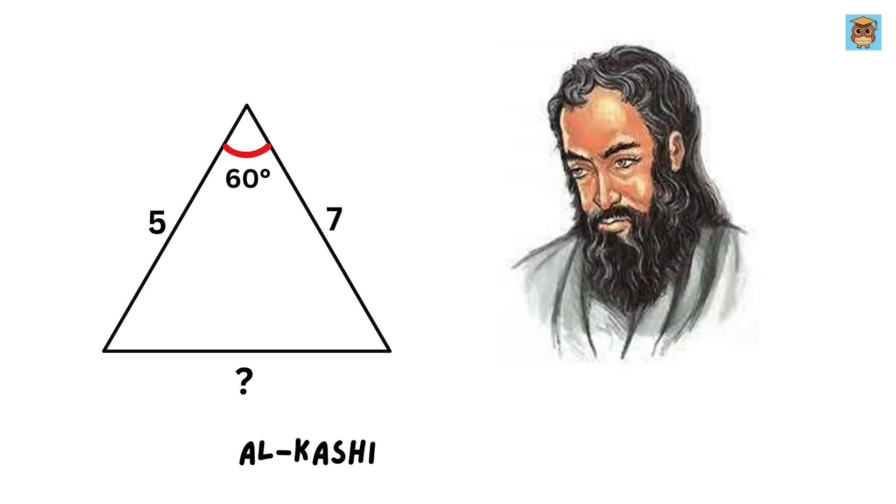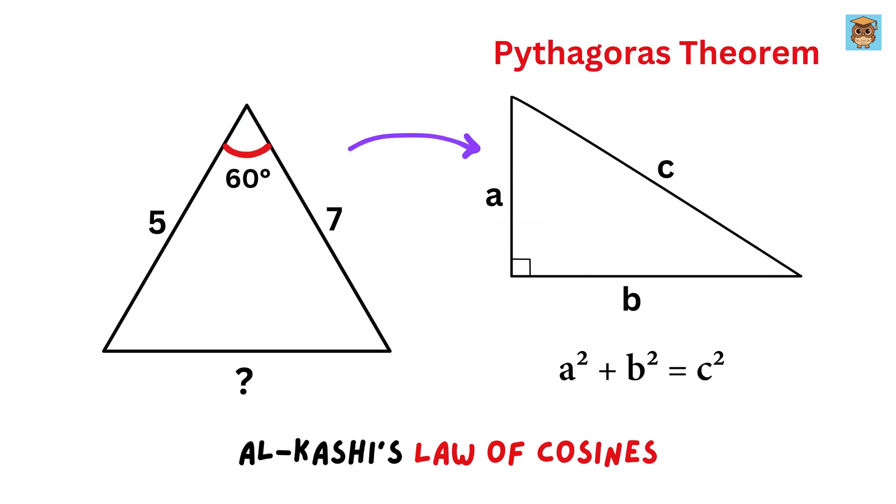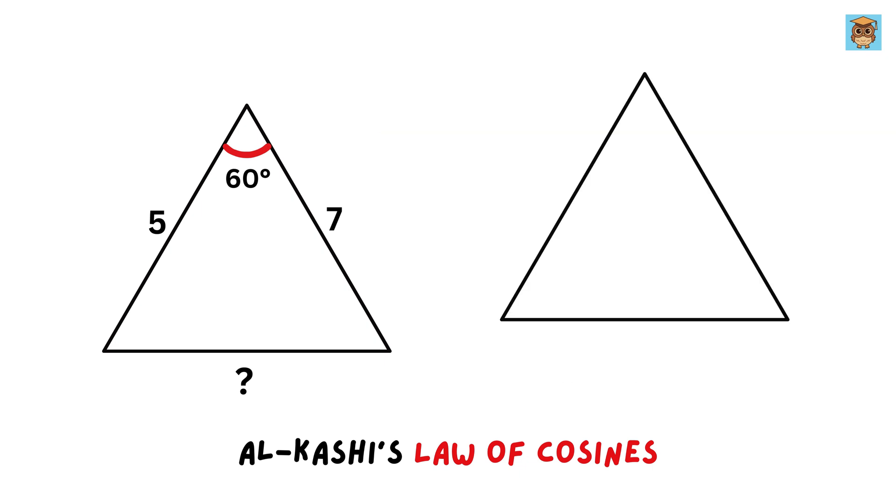This is where Al-Kashi's Law of Cosines steps in to save the day. It is a brilliant extension of Pythagoras' theorem, designed to work with any triangle no matter how its angles are arranged. Imagine you have a triangle with sides labeled A, B, and C, and let the angles opposite these sides be called A, B, and C, respectively.